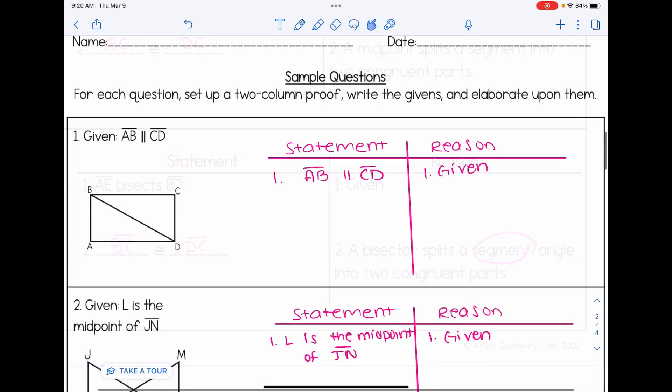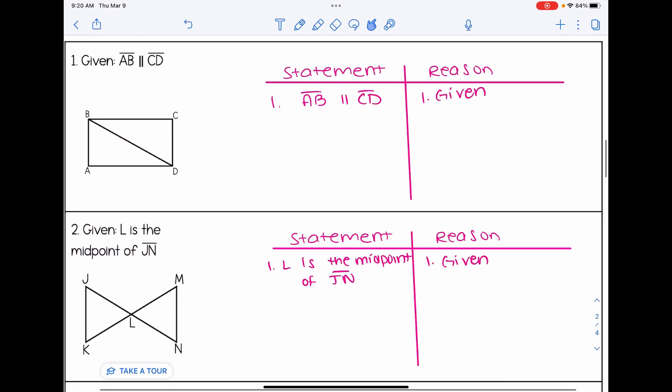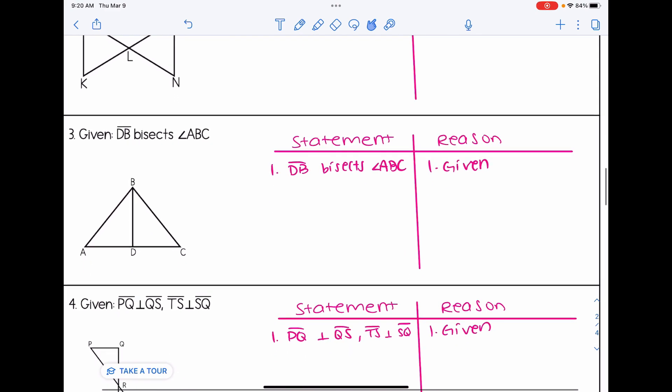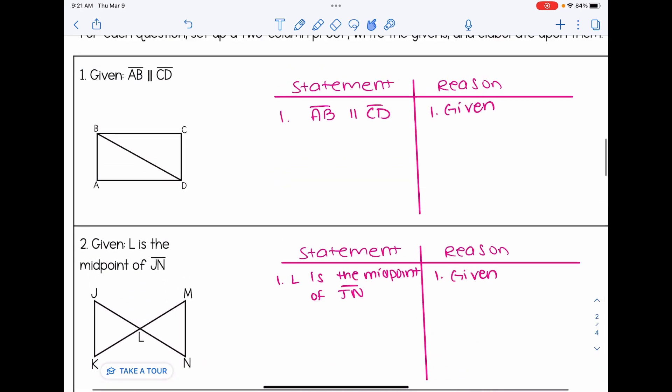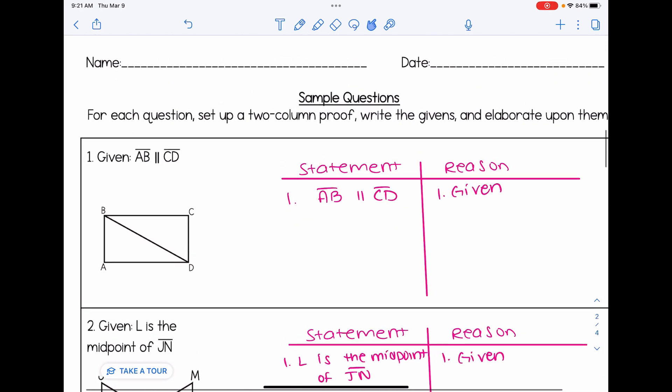So for our sample questions in this video, it says for each question, set up a two column proof, write the givens and elaborate upon them. I have already gone in and I have set up the two columns for each proof and I've written the givens for each proof. So now we're going to talk about how do we use that cheat sheet to fill out more of the proof.